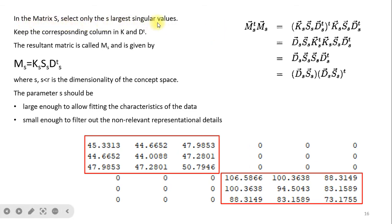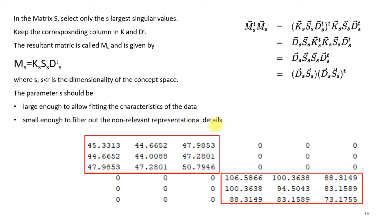In the reduced matrix, we select only S — the largest singular values — and keep the corresponding columns in K and D. The resultant approximation is M̂ = K_s · S_s · D_s, where S_s < R (the dimensionality of the concept space). Total concepts are 6 but we select only 2 dominant ones. The parameter S should be large enough to capture the characteristics of the data and small enough to filter out non-relevant representation details.